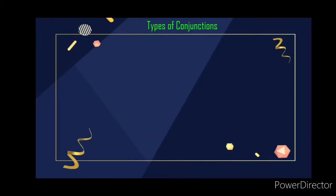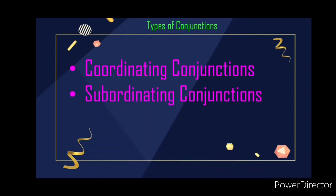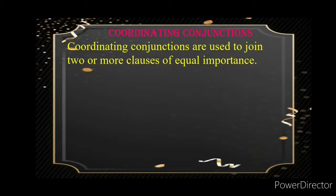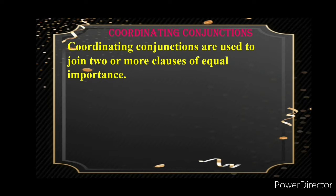Conjunctions are mainly of three types. They are coordinating conjunctions, subordinating conjunctions and correlative conjunctions. Coordinating means of equal rank. Coordinating conjunctions are used to join two or more clauses of equal importance. Thus, we can say that conjunctions which join together two statements or clauses of equal rank are called coordinating conjunctions.